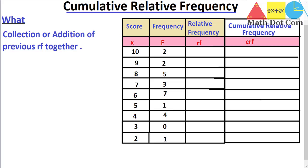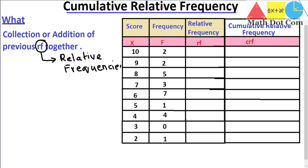Cumulative relative frequency is basically the collection or addition of previous relative frequencies together. The cumulative frequency is the addition of previous frequencies, but cumulative relative frequency is the addition of previous relative frequencies — not the frequencies. Keep this in mind. So for finding the cumulative relative frequencies, you should have the relative frequency, and for finding the relative frequency, you should have the frequency. All these are dependent on each other.